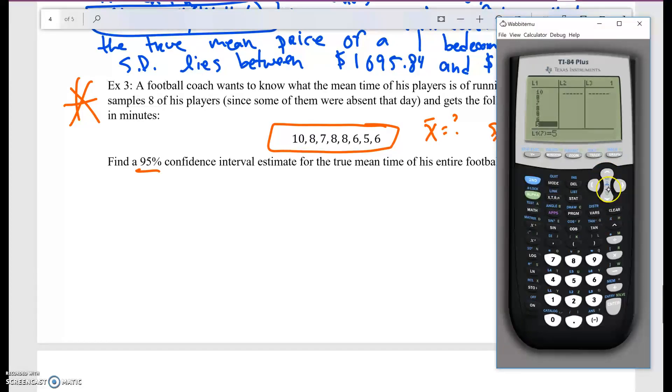Now if you have the TI-36, after you enter your data, you're going to go to second data, and then you're going to do one variable statistics. With this calculator, you're going to go to stat, you're going to go to calculate, and go to one variable statistics here. You're going to go all the way down to calculate.